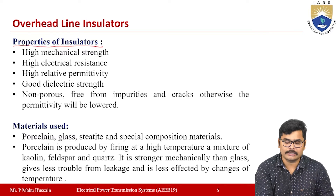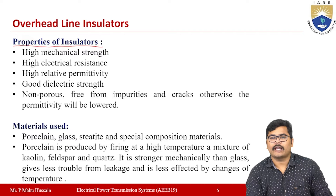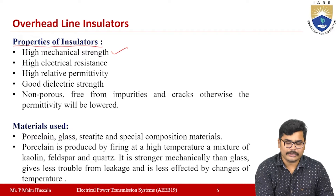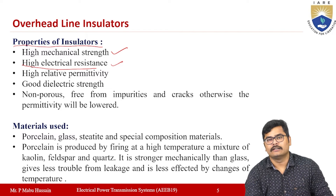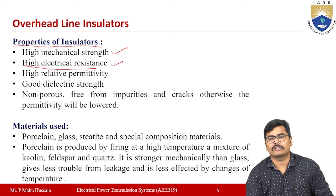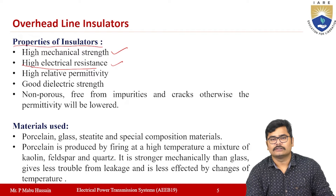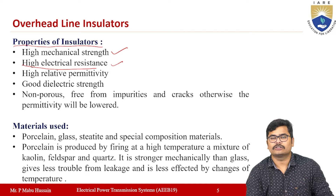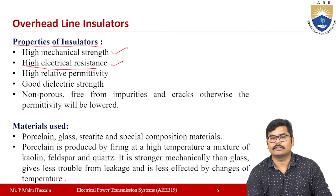The insulator must have high mechanical strength to withstand the weight of the conductor. It should also have high electrical resistance — there should be no leakage currents from the live conductor to the support structure. If leakage current is present, a person touching the tower or pole could get an electric shock, so the insulator must have high electrical resistance.